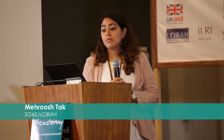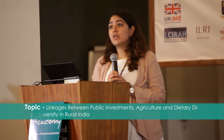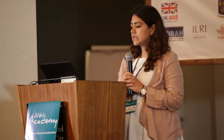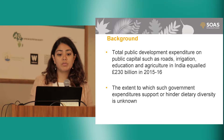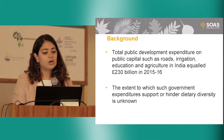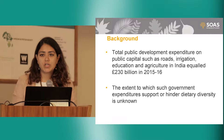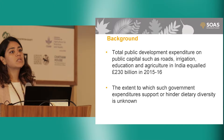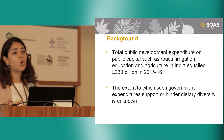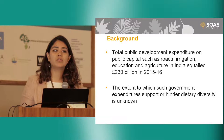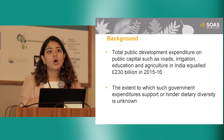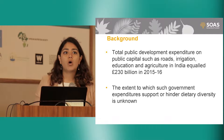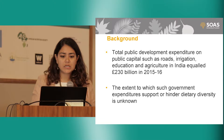We know that in India the government actually spends a lot of money on the development of these public capitals. In 2015 and 16 itself, the government of India spent about 230 billion pounds on development of roads, irrigation, education, and agriculture in general. So the motivation behind this project really was to understand better what is the rate of return on public expenditures and investments on dietary diversity, or what is the association between these things.